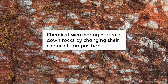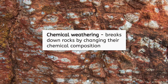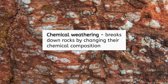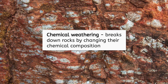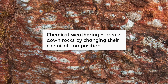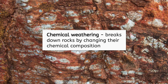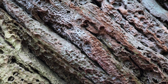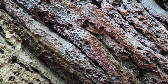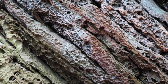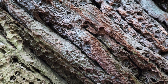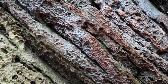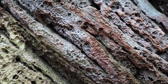Chemical weathering, on the other hand, breaks down rocks by changing their chemical composition. It happens when minerals in the rocks react with substances like water, oxygen, acids, and carbon dioxide, weakening or dissolving the rock over time.